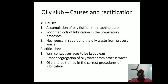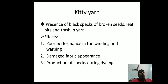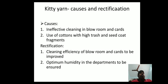Rectification for oily slub: yarn contact surfaces are to be kept clean, proper segregation of oily waste from processed waste, and oilers are to be trained in the correct procedures of lubrication. Kitty yarn refers to the presence of black specks of broken seeds, leaf bits, and trash in the yarn. Effects include poor performance in winding and warping, damaged fabric appearance, and production of specks during dyeing. Causes include ineffective cleaning in blow room and cards, and use of cottons with high trash and seed coat fragments. Rectification requires efficient cleaning.